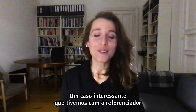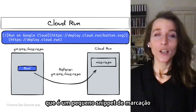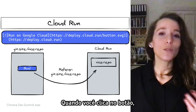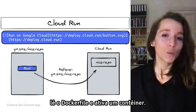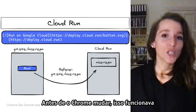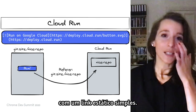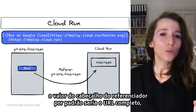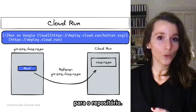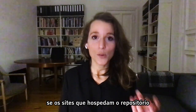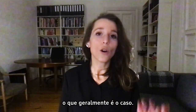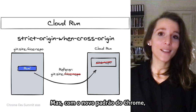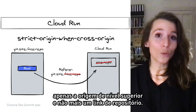One interesting case we had with the referrer was the Cloud Run button — a snippet of markdown you can put into the README of a Git repository that generates a button. When you click it, it sends you to the Cloud Run site, reads the Dockerfile, and spins up a container. Before Chrome's change, this worked with a simple static link, because the Referer header would be the full URL of the repository page, which is easy to transform into a repo link.